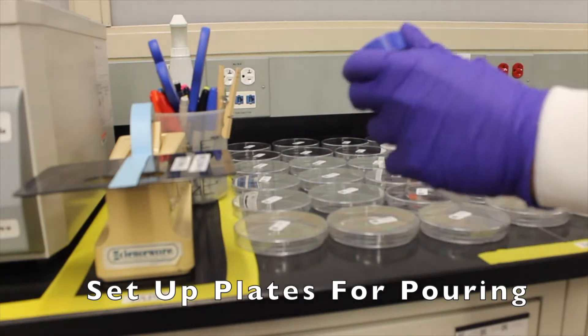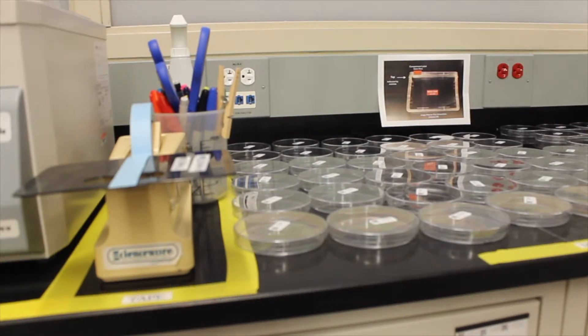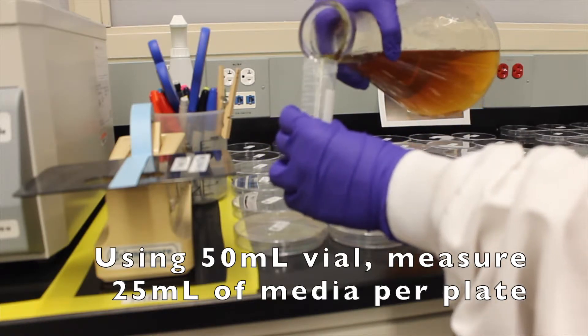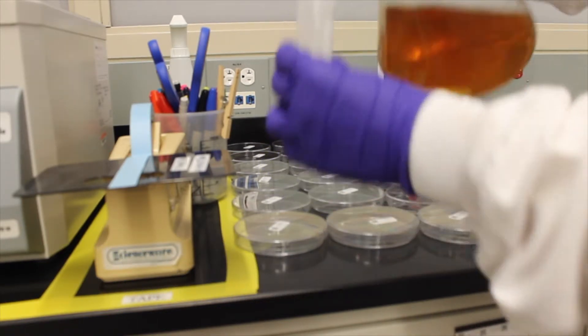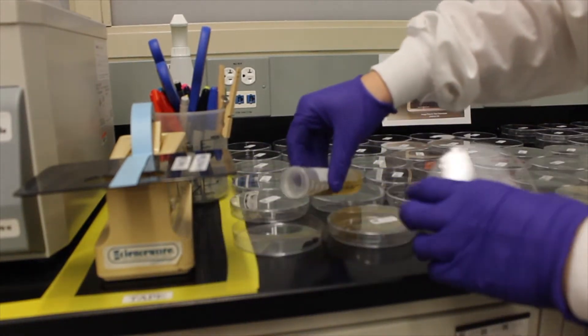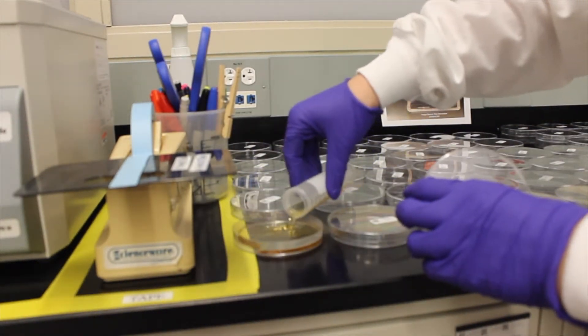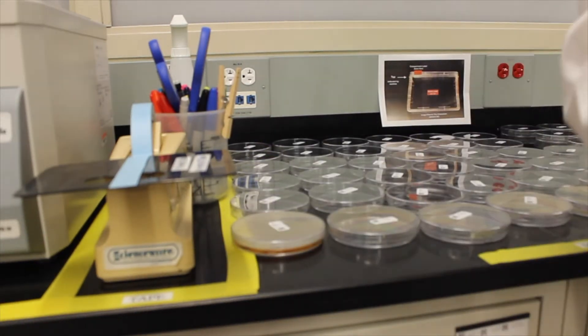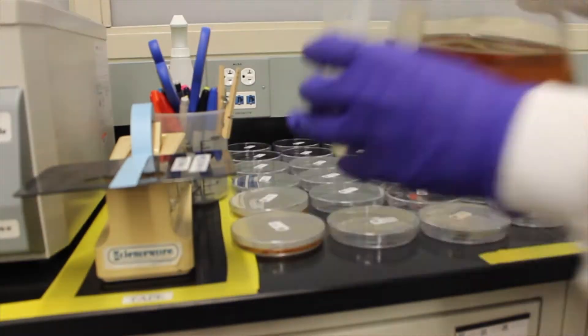Now it's time for pouring the plates. Using a 50 milliliter conical vial, we're going to fill it up to 25 milliliters. And for each round plate, we're going to put 25 milliliters of agar media into each. We'll do this for all the plates until they are all full.